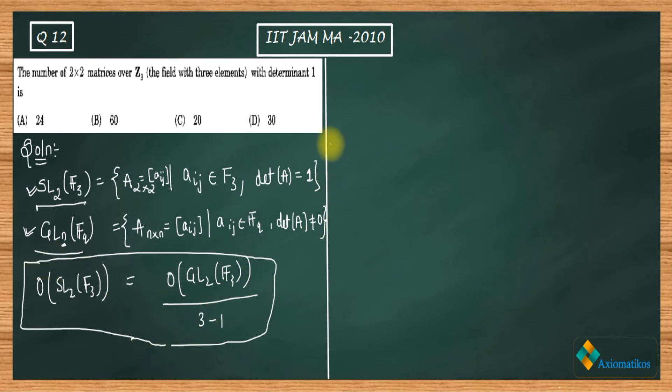Now you know that order of GL(n, Fₚ) is actually p to the power (n²-1) times p to the power (n²-p) up to p to the power n² minus p to the power (n-1). This is the order.